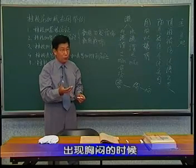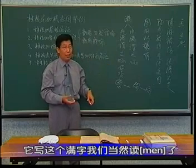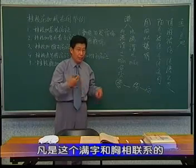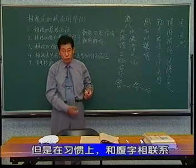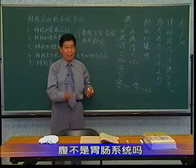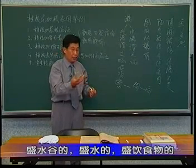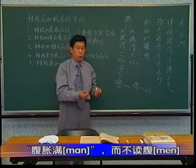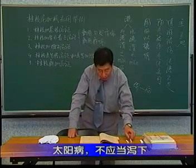为什么读闷呢，因为胸中气塞。所以当气机不利，出现胸闷的时候，这个满字就读闷了。在伤寒论里，凡是这个满字和胸相联系的，和邪相联系的，都读闷；但是习惯上和腹字相联系，腹部是胃肠系统，盛水谷的，盛饮食物的，腹胀满，而不都读腹闷。太阳病不应当泻下，泻下以后造成了胸闷，这是表邪内陷胸中。